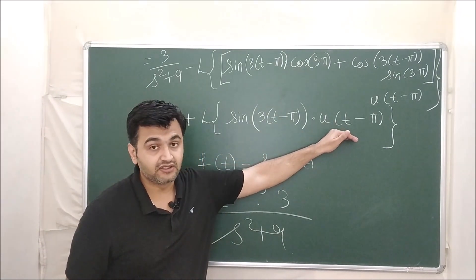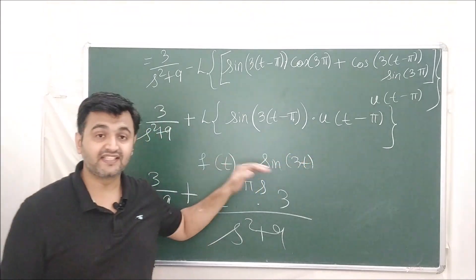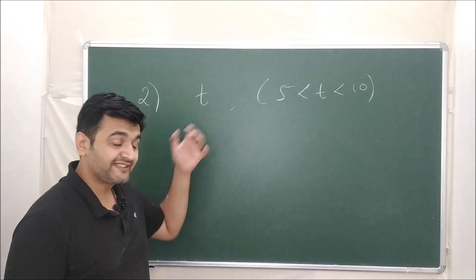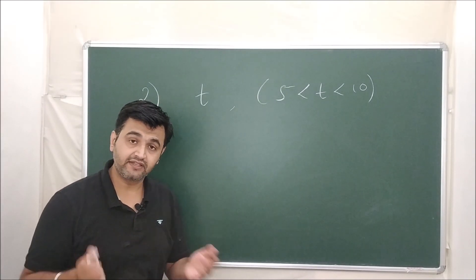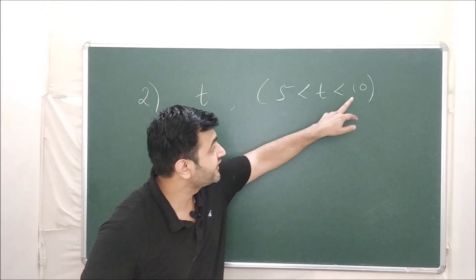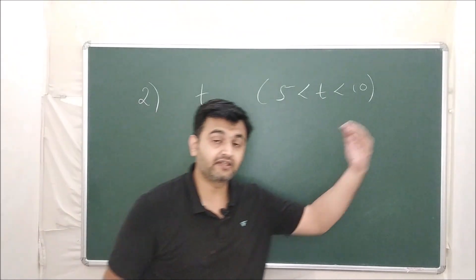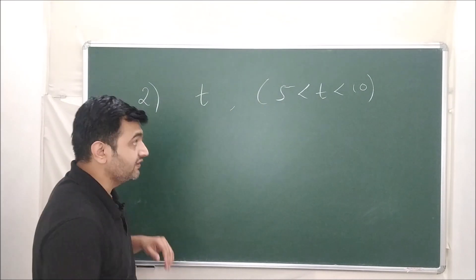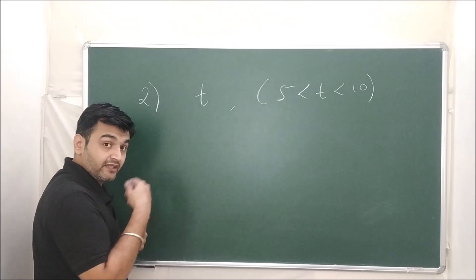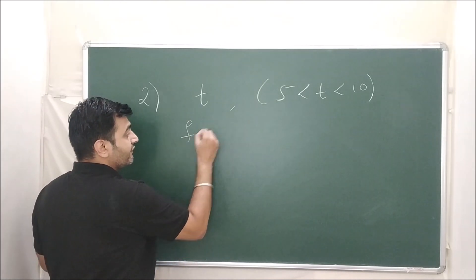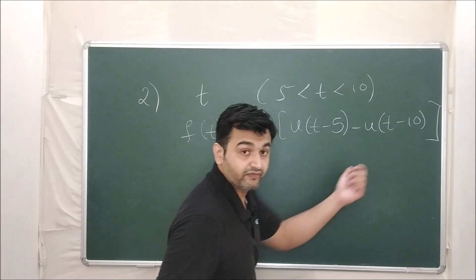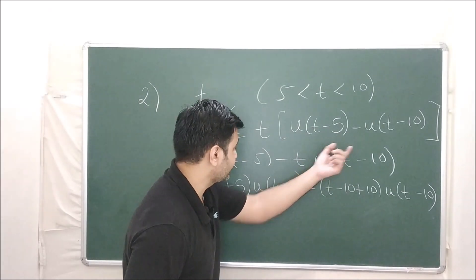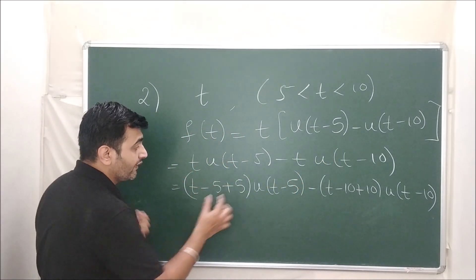I hope that example is clear. Let's take one more example. The function given is t on the interval 5 to 10, and 0 elsewhere. There is a jump at 5 and at 10: before 5 it is 0, after 10 it is 0, and from 5 to 10 it is t. As we saw in the last session, you express this as f(t) = t · [u(t − 5) − u(t − 10)].